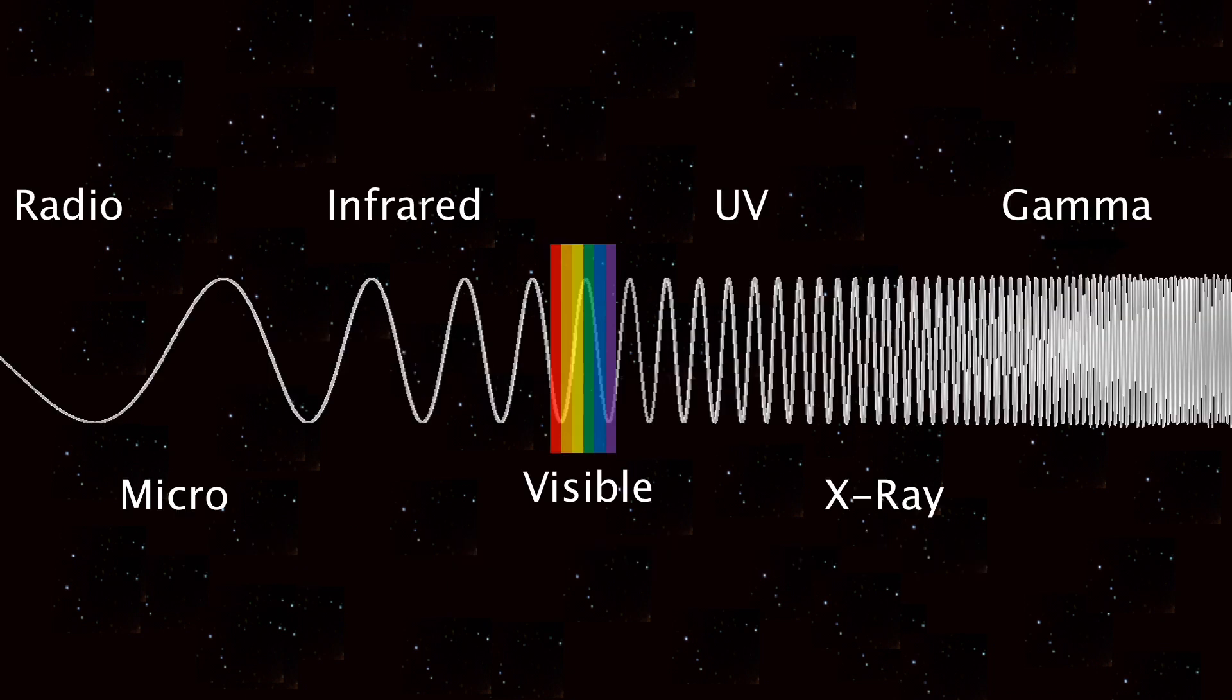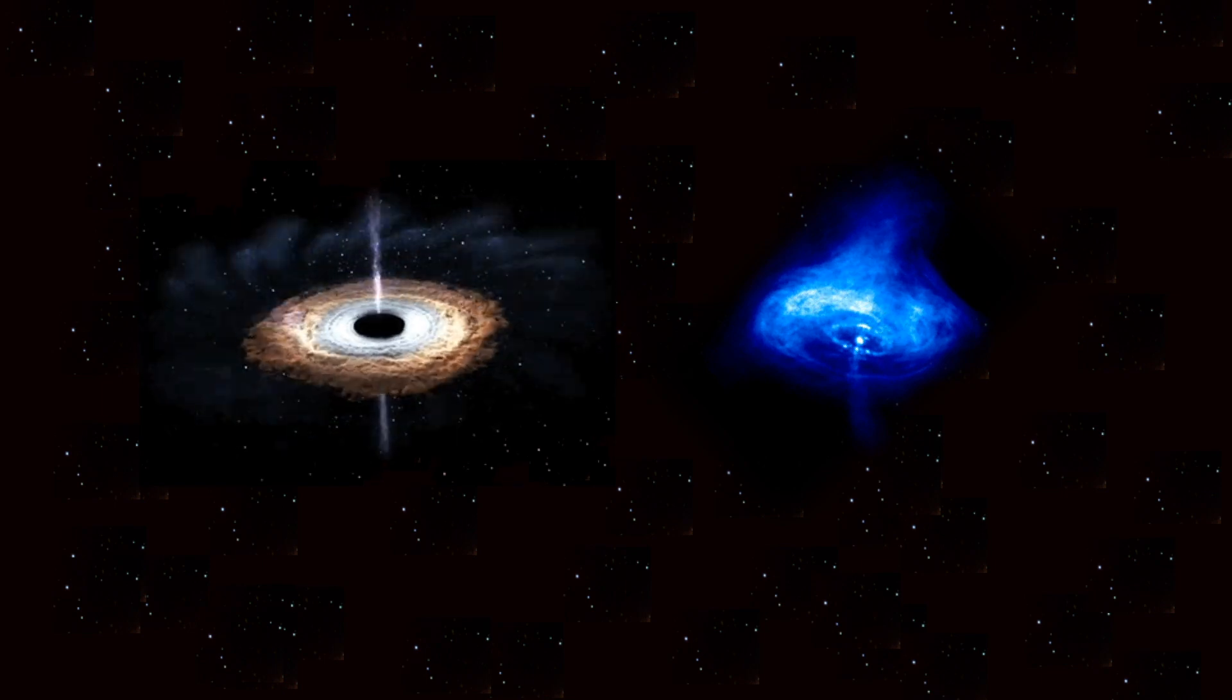The CTA is going to be able to detect very high energy gamma rays. These are only produced in really energetic environments like black holes and neutron stars.